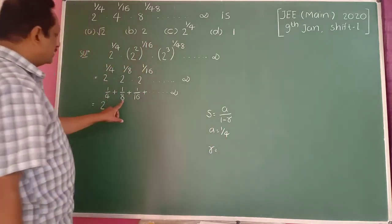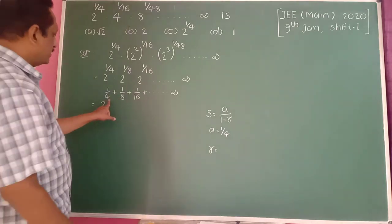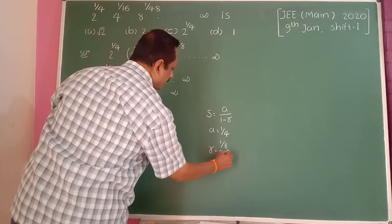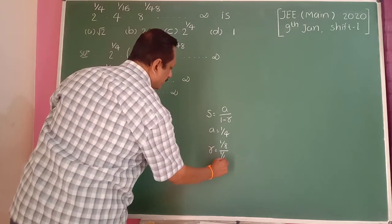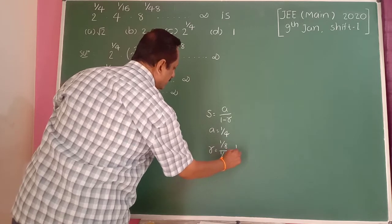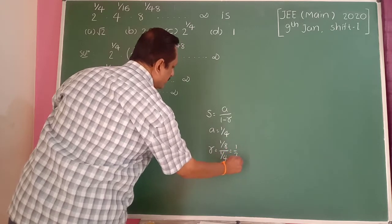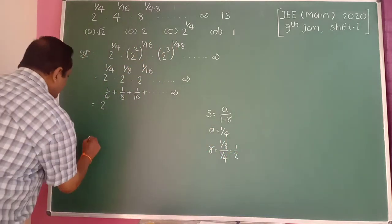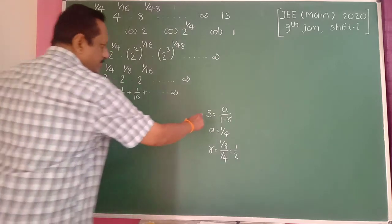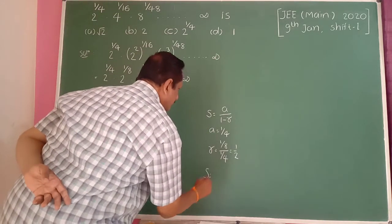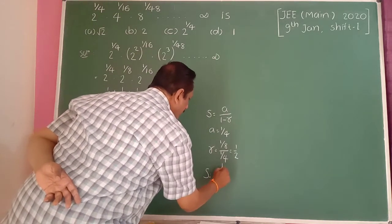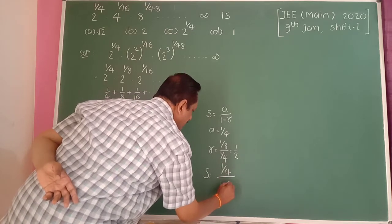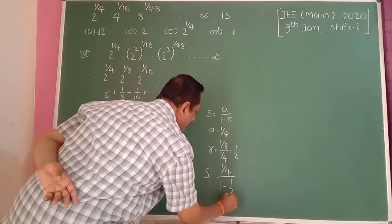The common ratio r is 1/8 divided by 1/4, which gives 1/2. Therefore, S is equal to 1/4 divided by 1 minus 1/2.